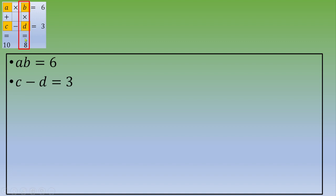If you focus on column number 2, this is B times D equals 8. And column number 1, this is A plus C equals 10. So far, we've got 4 equations with 4 unknowns.